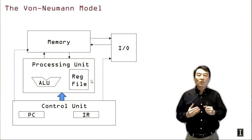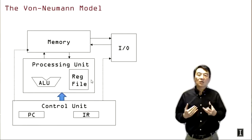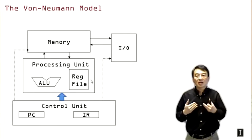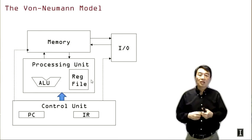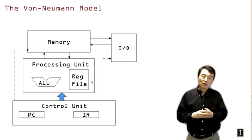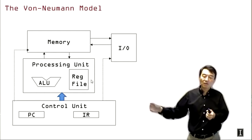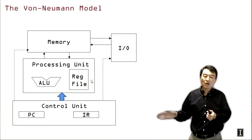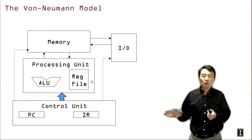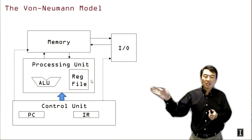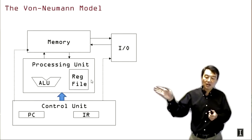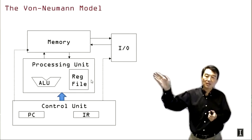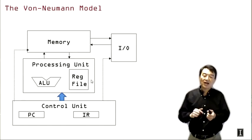To understand more about thread scheduling, we need to look at the hardware model. This is a review of the von Neumann processor model from the introductory lecture. We have a control unit that fetches instructions based on the PC, loads them into the instruction register (IR), and based on the instruction bits, the hardware decides what activities happen in the processing unit — ALU, register file, etc. It may also access memory data and handle I/O activities.